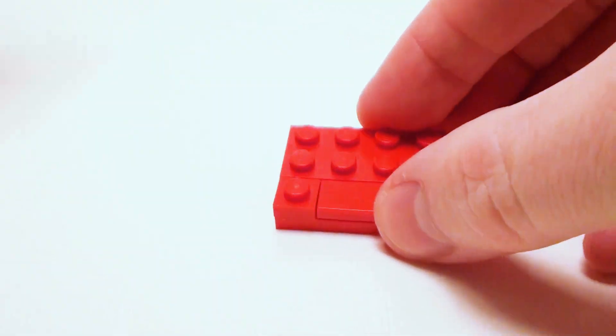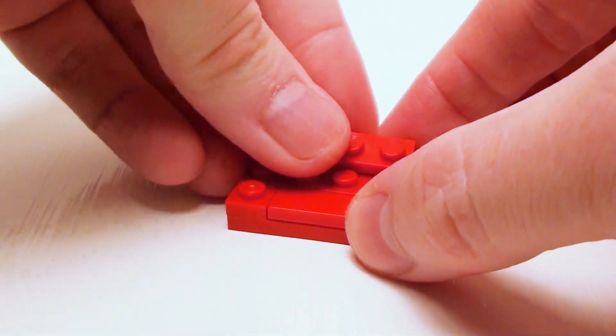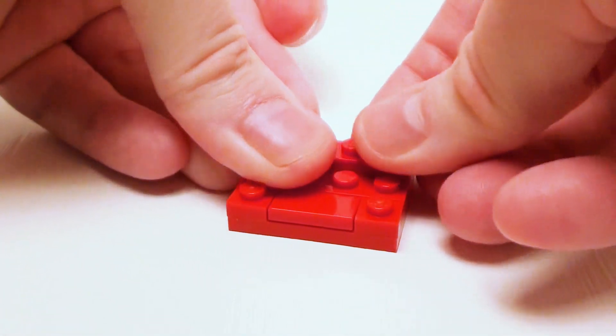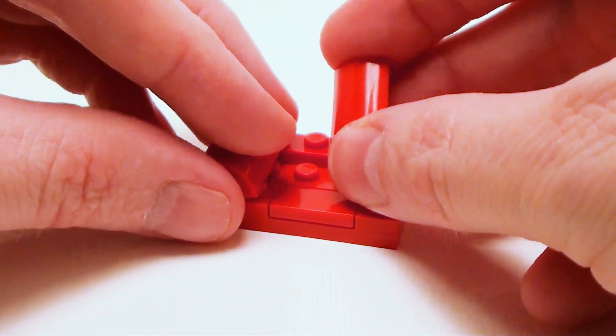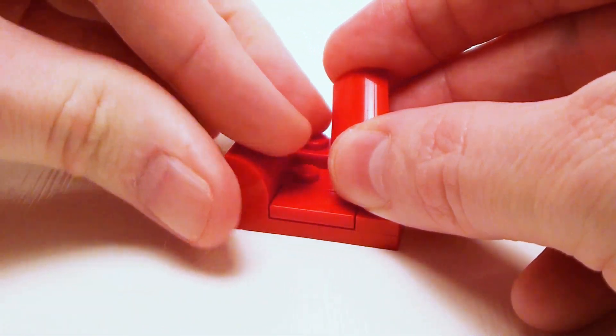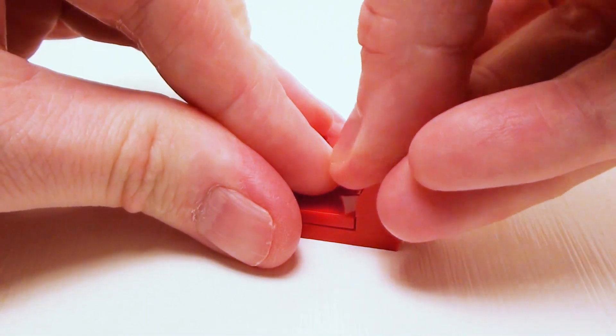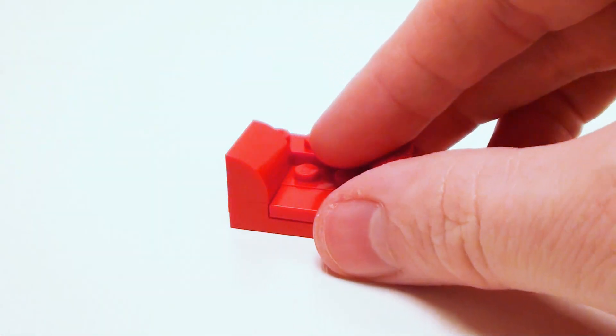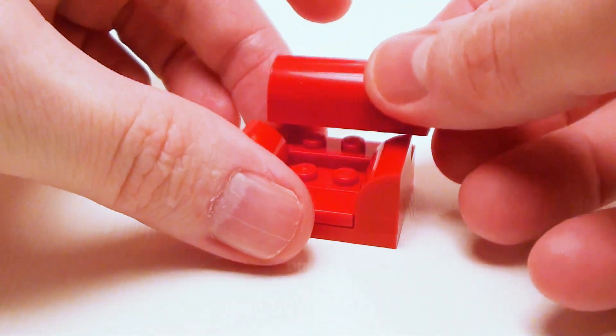Flip it over again and set down a 1 by 4 plate in the back. For arms, take a pair of 1 by 2 brick with half bow, set them on both sides, and a 1 by 4 by 1 and 1 thirds brick with half bow for the back.